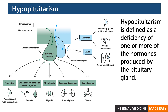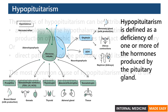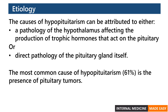Hypopituitarism is defined as a deficiency of one or more of the hormones produced by the pituitary gland. The causes can be attributed to either pathology of the hypothalamus affecting the production of trophic hormones that act on the pituitary, or direct pathology of the pituitary gland itself.